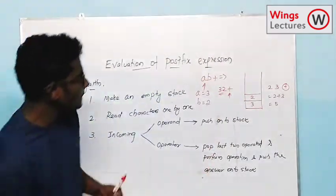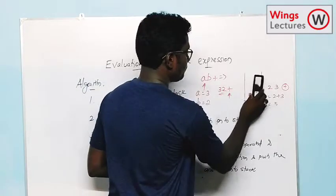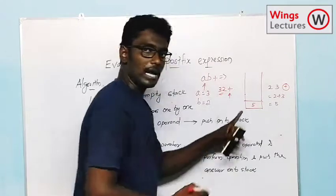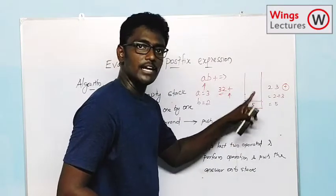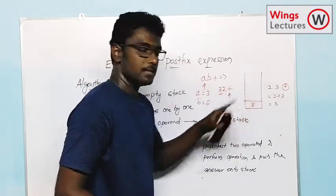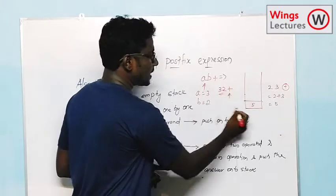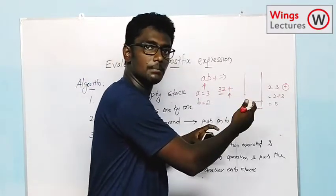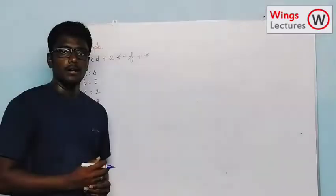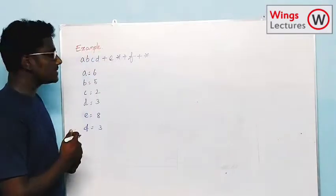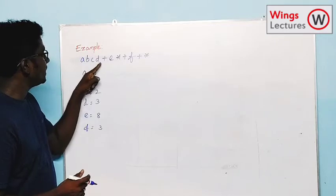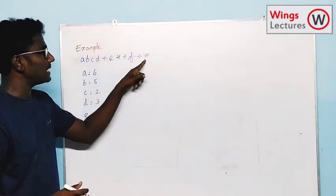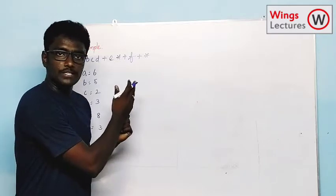And then I have to store the answer in the stack. So the final value will be the evaluated answer. That's the evaluation of this operation — just a simple one. I will go with another example. Here is the expression: A, B, C, D, plus, E, star, plus, F, plus, star. It's a postfix expression.